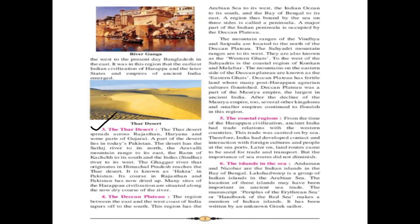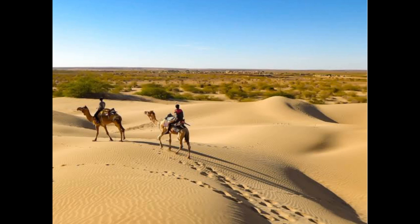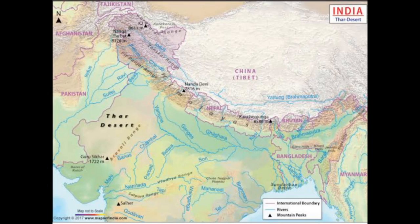The Thar Desert spreads across Rajasthan, Haryana, and some parts of Gujarat, with a part also lying in today's Pakistan. It is a very hot desert, and you can find a large number of camels there. To the north lies the Sutlej River, to the south lies the Rann of Kutch, to the east lies the Aravalli Range, and to the west lies the Indus River. The Ghaggar River from Himachal Pradesh also reaches the Thar Desert.